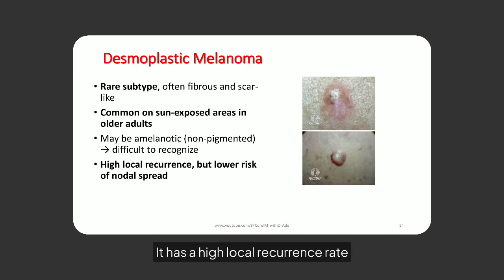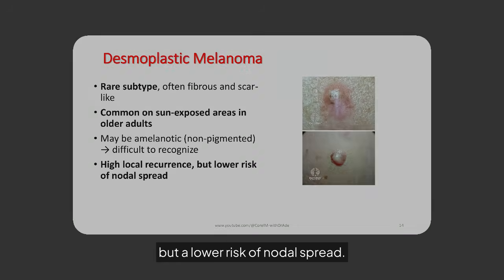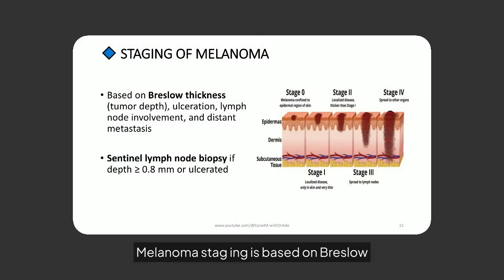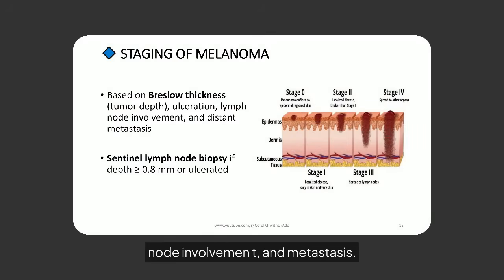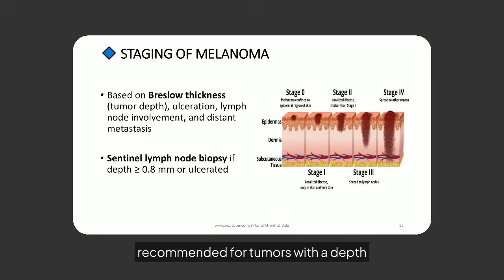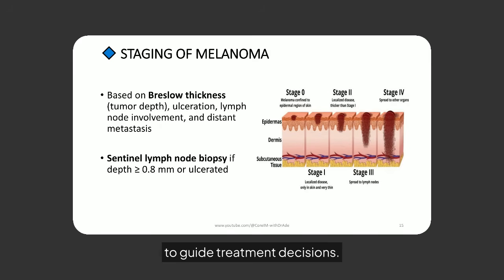Desmoplastic melanoma has a high local recurrence rate but a lower risk of nodal spread. Melanoma staging is based on Breslow thickness, ulceration, lymph node involvement, and metastasis. Sentinel lymph node biopsy is recommended for tumors with a depth of 0.8 millimeters or more, or if ulcerated, to guide treatment decisions.